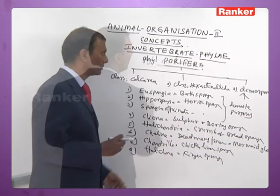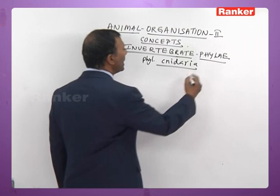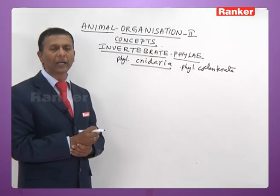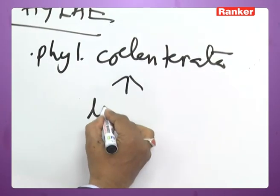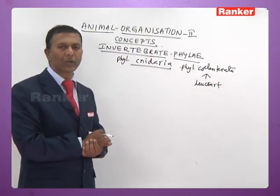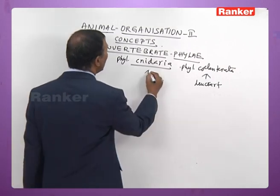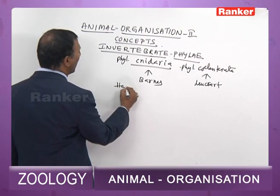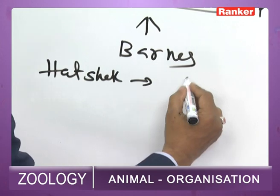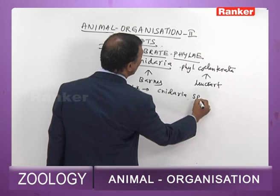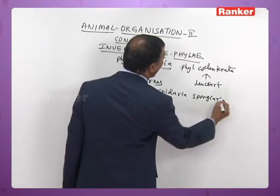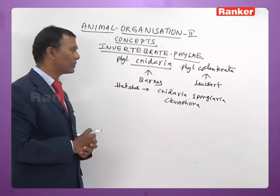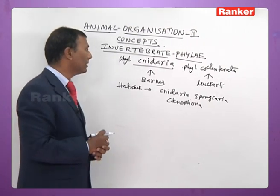Next we discuss phylum Cnidaria, also called phylum Coelenterata. The term Coelenterata was coined by Leuckart, and the term Cnidaria was coined by Hatschek. Hatschek divided the coelenterates into phylum Cnidaria, phylum Spongiaria (sponges), and phylum Ctenophora.